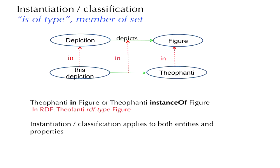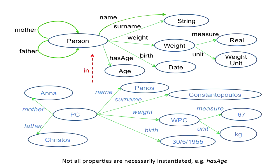In terms of notation, we write 'Theophany in figure' or 'Theophany instance of figure,' and in the RDF language we write 'Theophany rdf:type figure.' In this next example we have the class person with a number of properties assigned to it.